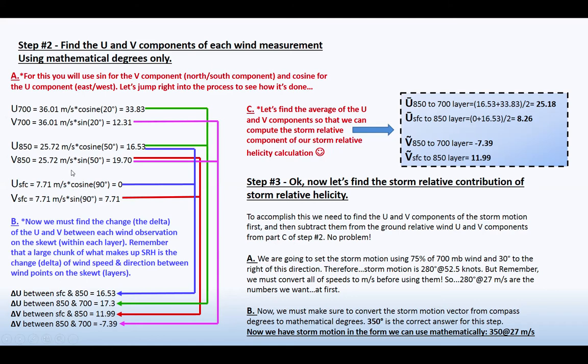And then once you get those, you will subtract. Now we must find the change, the delta of the U and V component between each wind observation on the skew T. Remember that a large chunk of what makes up storm relative helicity is the change or delta of wind speed and direction between wind points on the skew T or layers.